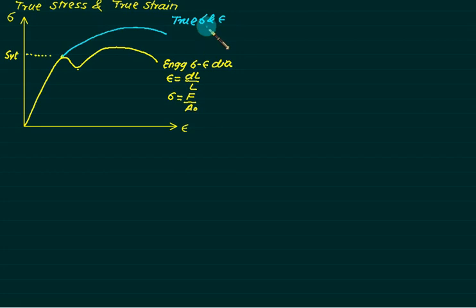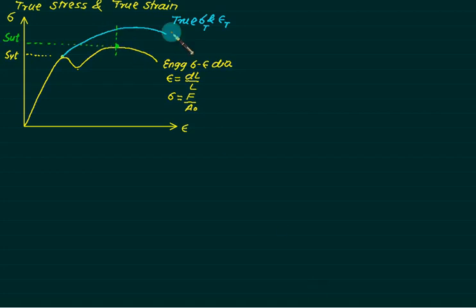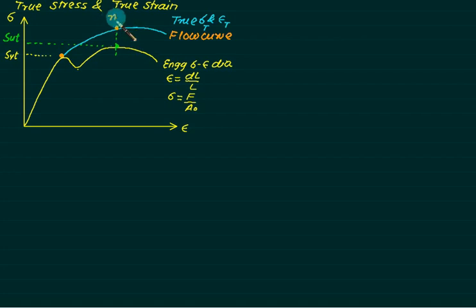To distinguish the two curves, we use the suffix sigma-t and epsilon-t. The maximum point on the true curve is SUT. This region is called the flow curve, defined from the yield point up to SUT.